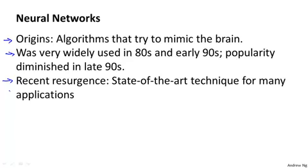But more recently neural networks have had a major resurgence. One of the reasons for this resurgence is that neural networks are computationally somewhat more expensive algorithm, and so it was only somewhat more recently that computers became fast enough to really run large scale neural networks. And because of that as well as a few other technical reasons, modern neural networks today are the state of the art technique for many applications.